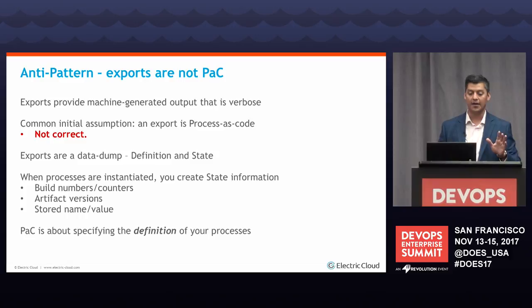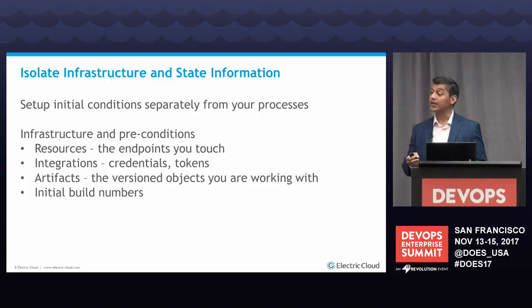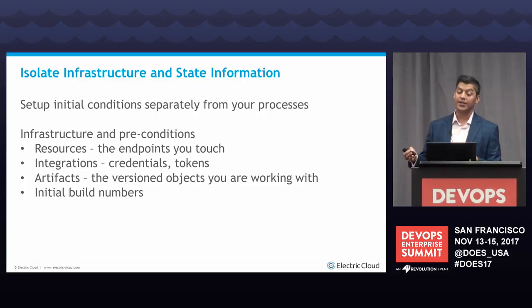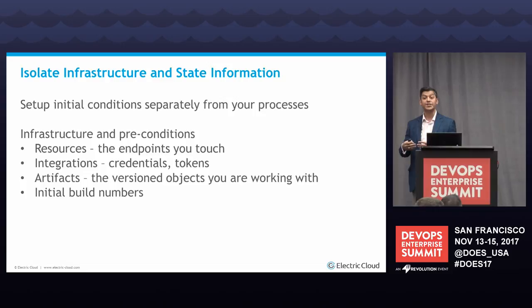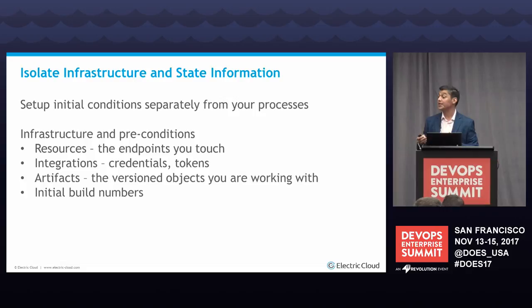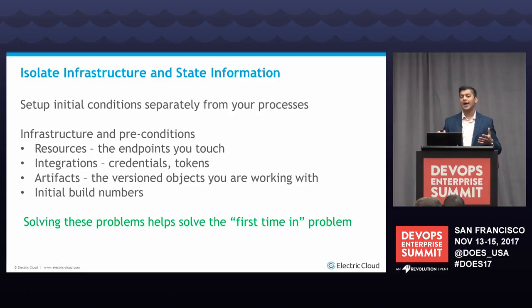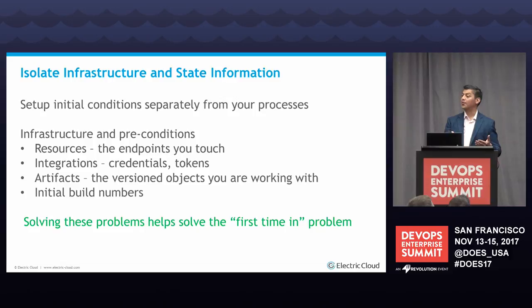I encourage people to think of it as: I am providing a definition of how my automation works, and I need to separate the state information. Isolate your infrastructure requirements and state information from the actual definition. This is your initial conditions. It could be a hundred resources or endpoints. It could be credentials — tokens, username/password — which shouldn't be part of your definition. Artifacts — deploying version one, two, or three of something — that's not part of your definition either. When you solve this, I call it the first-time-in problem. The first build always stinks because you don't know how to get the right build number or version number. Once you get it running once, it's working — and if you can figure this out, you have your first-time-in problem solved.